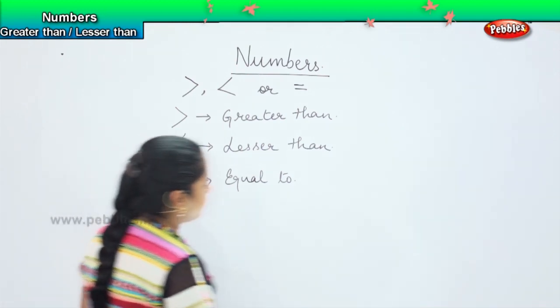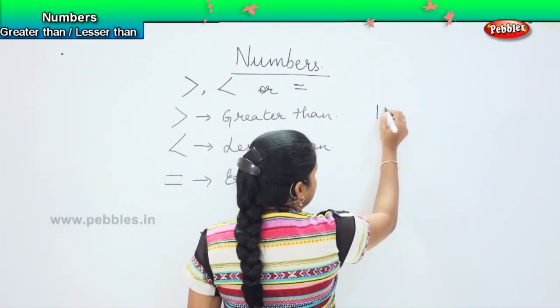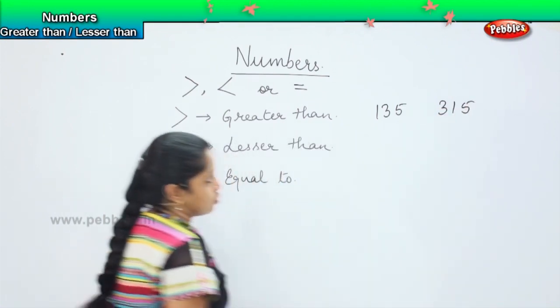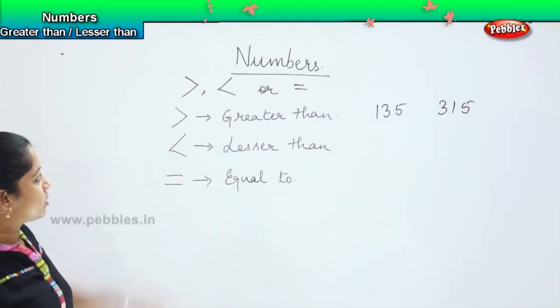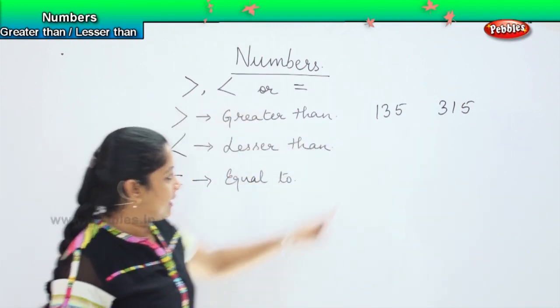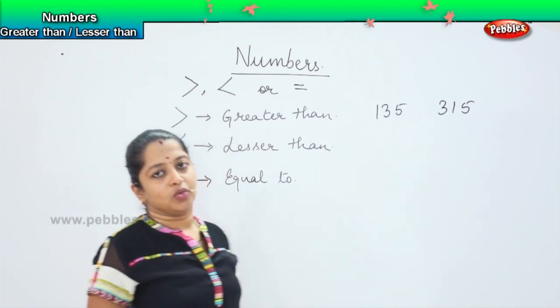Now, for example, if I give you 135 and 315, what does it denote? Which particular symbol will we use? Is it greater than, lesser than, or equal to?